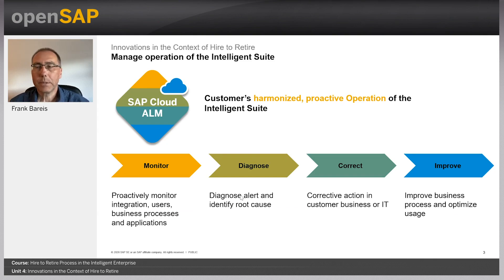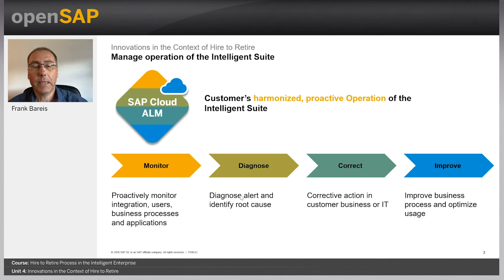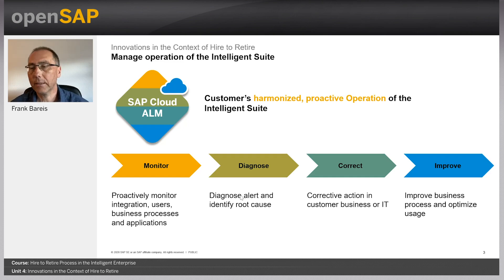Let's start with Cloud Application Lifecycle Management. It will enable administrators to monitor line of business solutions centrally. Its capabilities of central monitoring, exception management, and job management will allow users to monitor, diagnose, correct, and improve — making it a central monitoring, diagnosis, correction, and improvement application that's part of the Intelligent Enterprise.